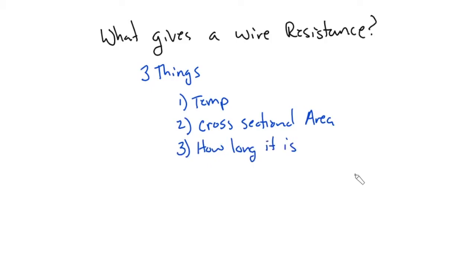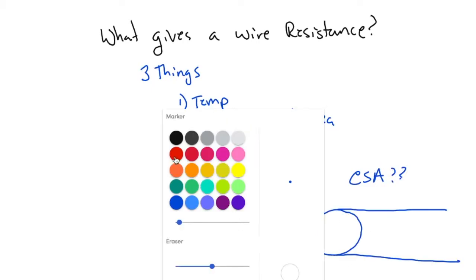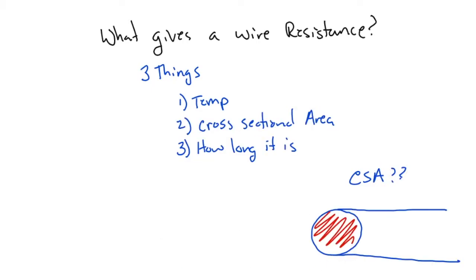And when I say what is cross sectional area, if I have a wire, this right here is the cross sectional area of the wire. So that right here, this area that we see, the diameter, we have the diameter and the circumference, but not counting the diameter and circumference, we can find this area in here, that's going to be our cross sectional area.